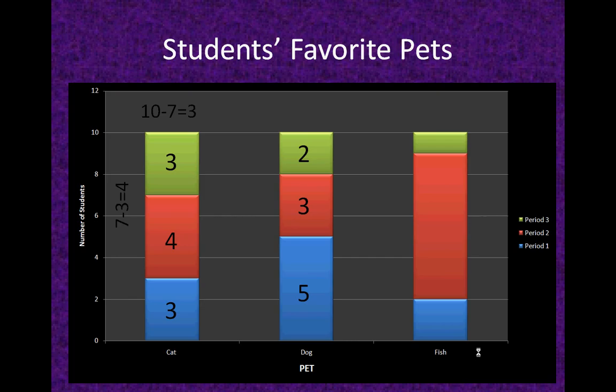Let's continue to the fish column. Two people like fish in period one. Seven people like fish in period two, which I find really hard to believe because I'm not sure anybody considers fish their favorite pet. But let's continue anyway.